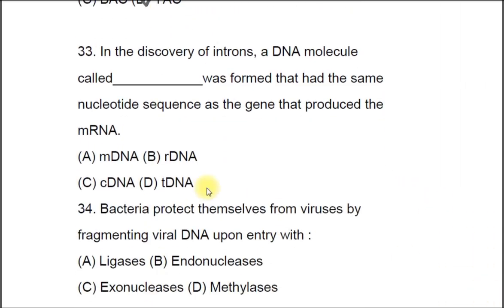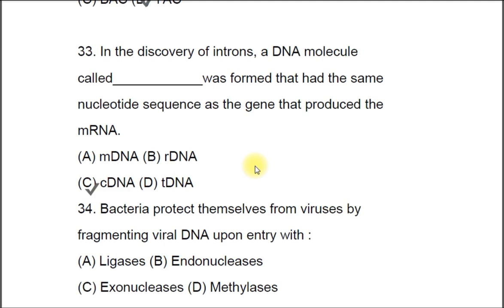Question 33: In the discovery of introns, a DNA molecule called dash was formed that had the same nucleotide sequence as the gene that produced the messenger RNA. The options are M-DNA, R-DNA, C-DNA, T-DNA. The correct answer is C, cDNA.